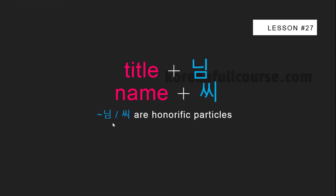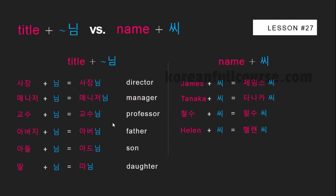The last topic for today is honorific particles 님 and 씨. You can think of them as Mr. and Ms. or Mrs. 님 is attached to job titles and family member titles — for example: 사장 → 사장님, 매니저 → 매니저님, 교수 → 교수님. There are three exceptions: instead of 아버지님 say 아버님; instead of 아들님 say 아드님; and instead of 딸님 say 따님. You may wonder why you would show respect to children — I'll show you in what situations you might use it in a moment.